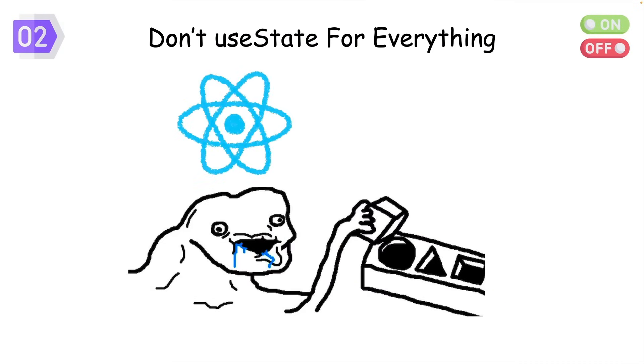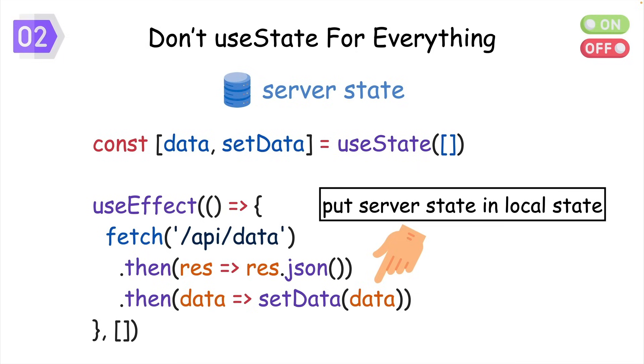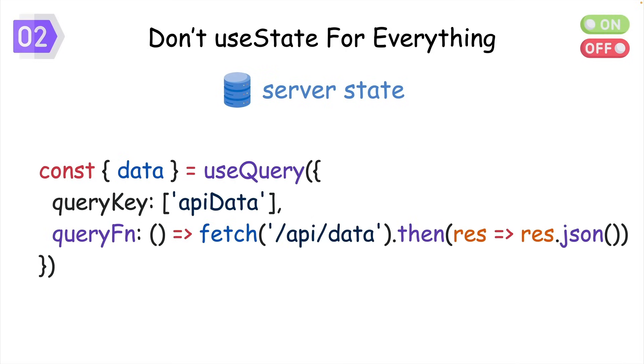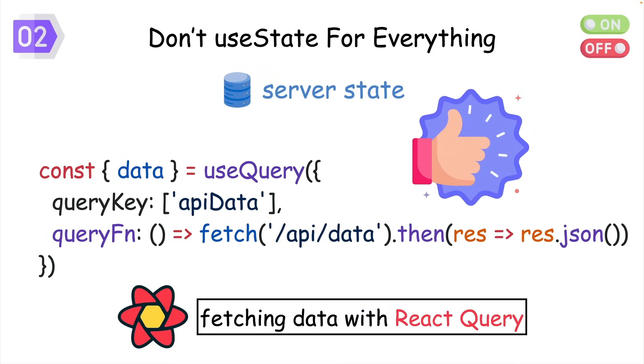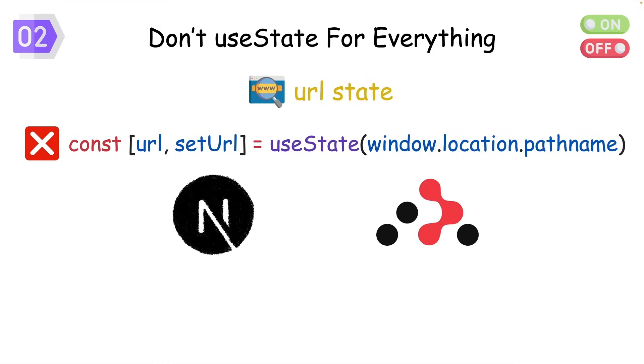If you've been a React noob, you probably recognize this code. We're trying to manage server state by fetching it in useEffect and put it in state, but you're way better off using a dedicated library like React Query for this, as I'll explain later. As for URL state, you might have tried to put it in local state like this. But if you're using Next.js or React Router, you've already got a dedicated hook like usePathName or useLocation that gives you all that data.